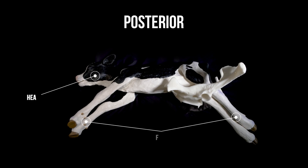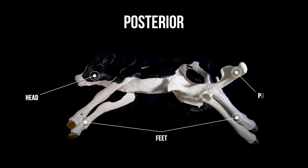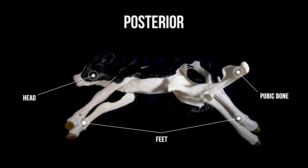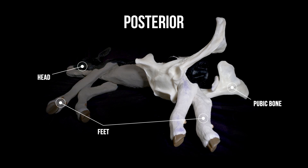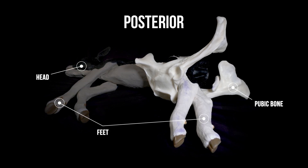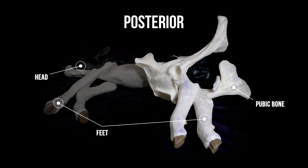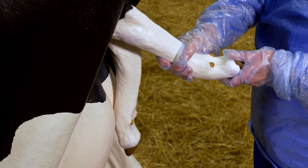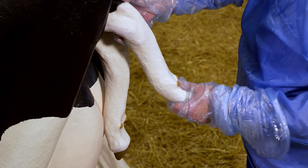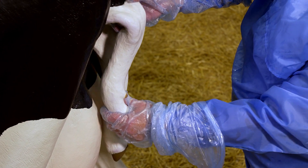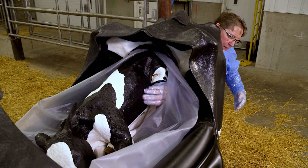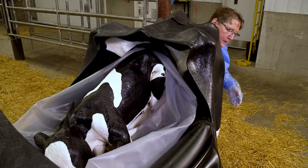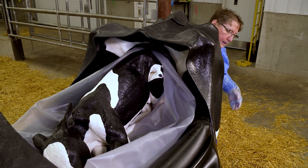A posterior presentation, commonly known as a backwards position, is when the rear feet and tail of the calf are in the birth canal with the spine of the calf resting against the underside of the cow's spine. The two joints closest to the rear hoof bend opposite of each other. Feel for and follow the length of the legs to the body on either side of the tail to confirm they are rear legs.